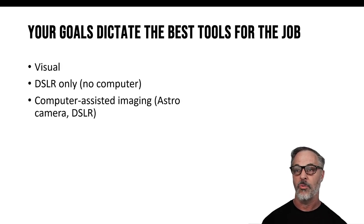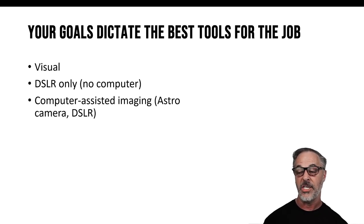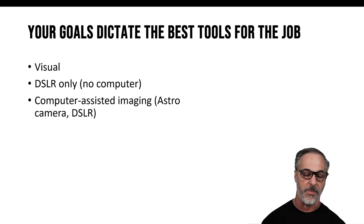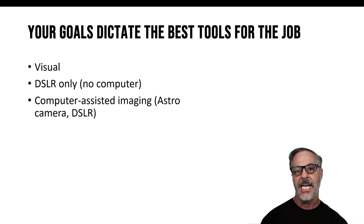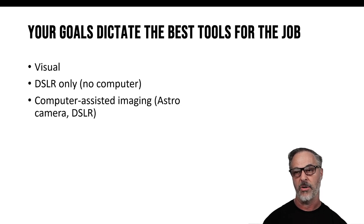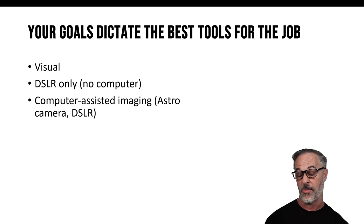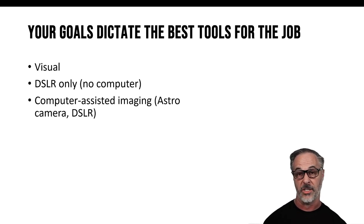Your goals are really going to dictate the best tools for the job and also the best approach. You're going to find that some of these things won't be important for you depending on your approach. We're going to go through three examples: visual observing, which is using an eyepiece to observe things out in the universe; and imaging with a DSLR or mirrorless camera with no computer — a lot of times folks do this as a first foray into imaging, and it's super portable and fast.